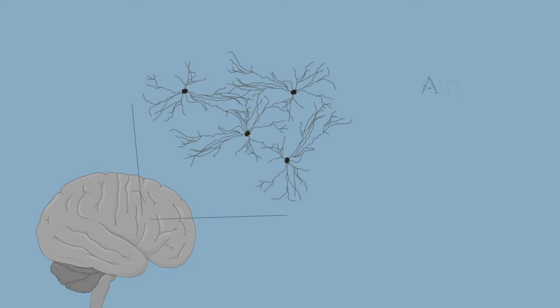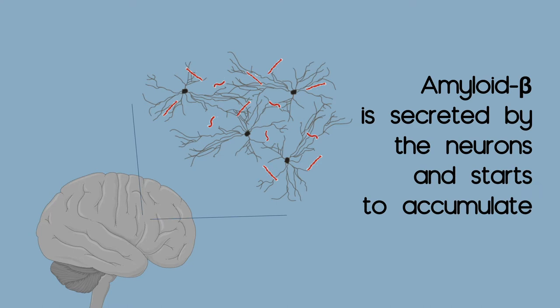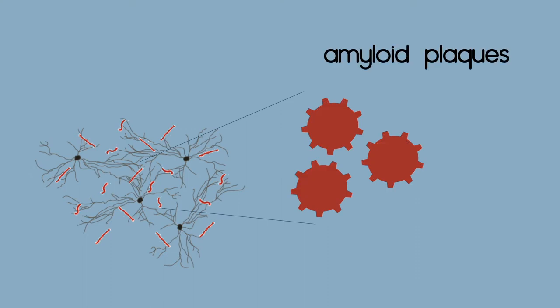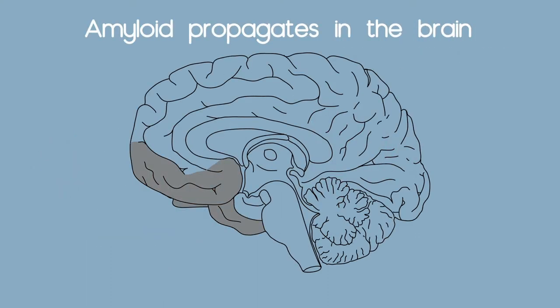a small peptide called amyloid beta is secreted by the neurons and starts to accumulate. All this amyloid binds to itself and forms sticky aggregates called amyloid plaques, which could propagate in the brain.